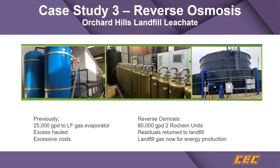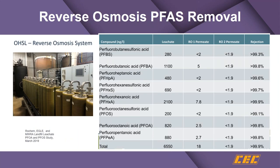The Orchard Hills landfill has a reverse osmosis system. They had a plant improvement — the original system had a 205,000-gallon-per-day gas evaporator that was replaced with an 80,000-gallon-per-day Rochem reverse osmosis unit, with residuals returned to the landfill. They have significant removal results — virtually all PFAS constituents down to low single digits — and the system has been in operation for several years.